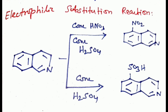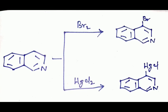Whereas in bromination and mercuration, the electrophile attacks in the fourth position. That is, isoquinoline combined with bromine to form 4-bromoisoquinoline.